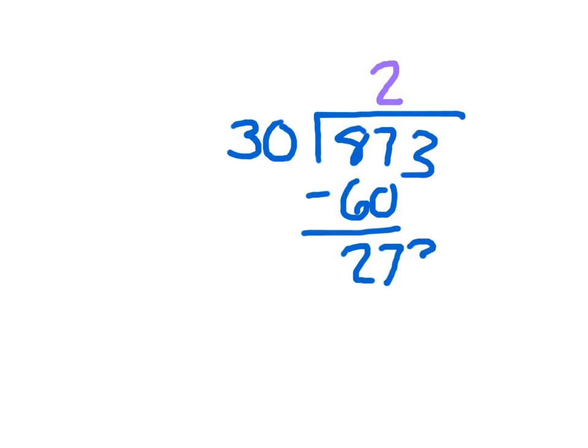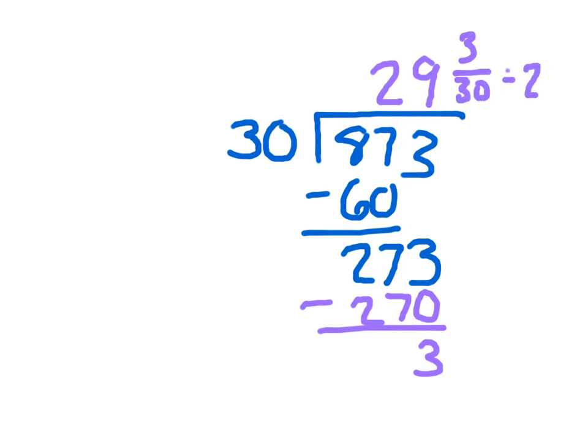At that point, I bring down the 3, and 273 divided by 30 is 9, because 9 times 30 is 270. 273 minus 270 is 3, so our remainder would be 3. We're not going to use remainders though. So we have 29 and 3 thirtieths, which simplifies down to 29 and 1 tenth, which does equal 29.1 as a decimal as well.